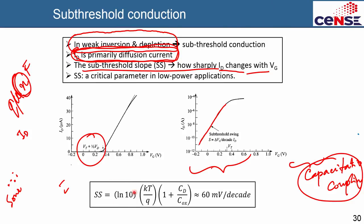Working out the mathematics — the capacitive coupling times the rate at which drain current changes with band bending — gives an expression: the sub-threshold slope equals ln(10) × (kT/q) × (1 + CD/Cox). The ln(10) factor comes from converting between natural log and log base 10.